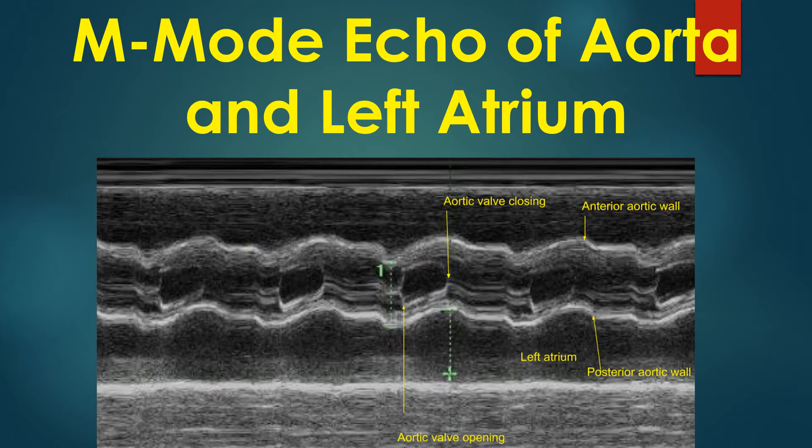Left atrial dimension is greater in systole than in diastole due to the movement of the aorta. In the fully opened position of the aortic valve, the separation of the two leaflets gives an indication of the cardiac output. Poor opening excursion will indicate a low cardiac output. Excursion of the walls of the aorta also gives an indication of the cardiac output.